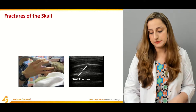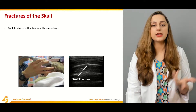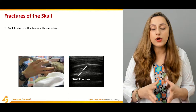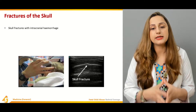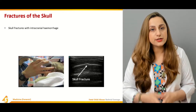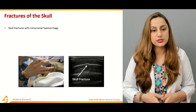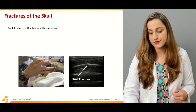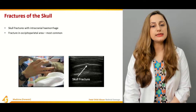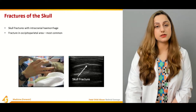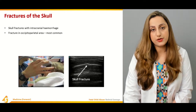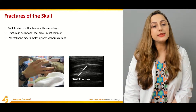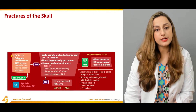Depressed fractures of the skull occur when the tables of the skull are pushed downwards. Depending upon the severity of the head injury, the type and extent of fracture will vary. Skull fractures with intracranial hemorrhages are commonly found, and fractures in the occipital and parietal areas are the most commonly involved regions. The parietal bone may dimple inwards without cracking.